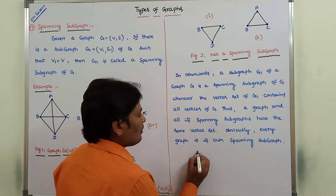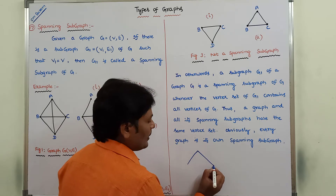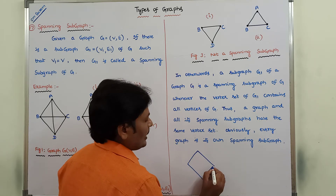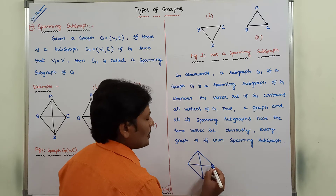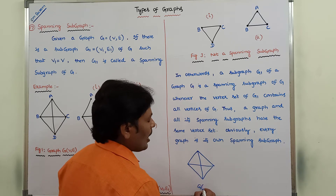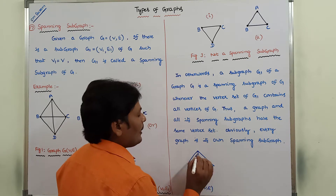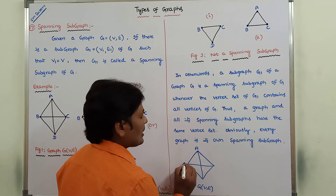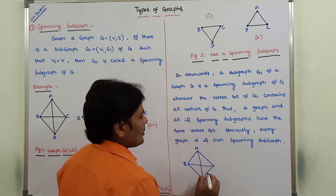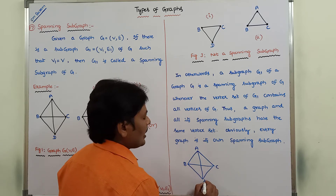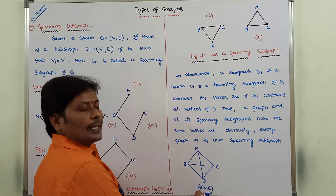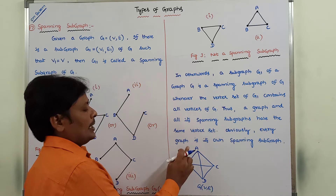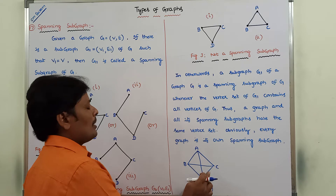So now I am taking a graph. That graph is denoted by G of V comma E. Here V is nothing but set of vertices. That set is A, B, C, D.